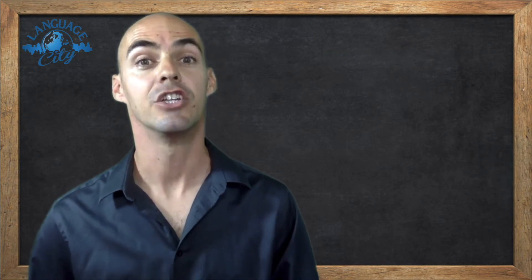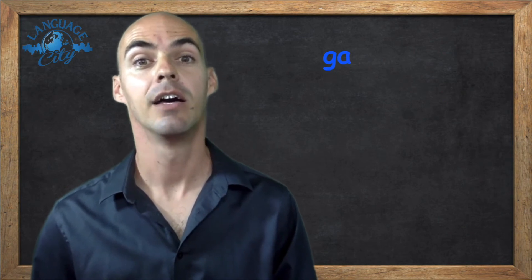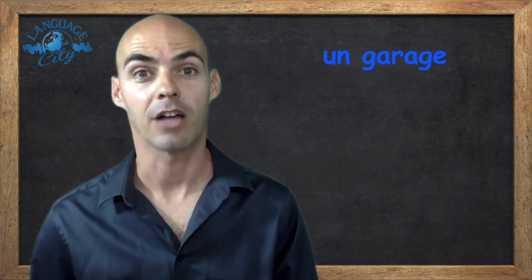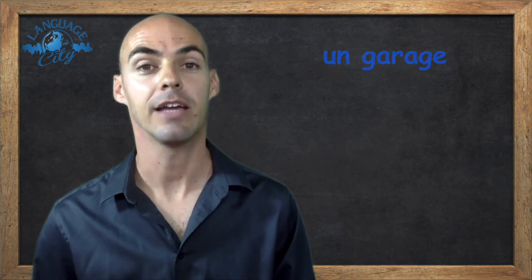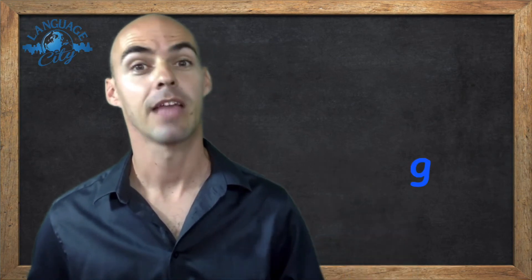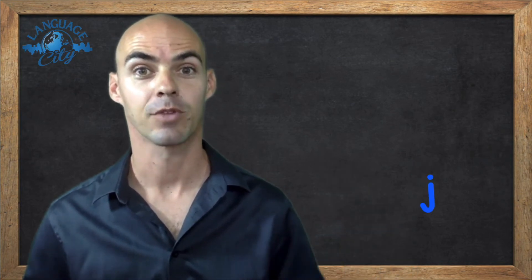Number three was G, A, R, A, G, E. A garage or parking garage. And remember the G and the J are pretty much switched in French. So this is G and that is J.